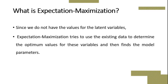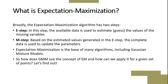Since we do not have the value for the latent variable, Expectation Maximization tries to use the existing data to determine the optimum value for this variable and then find the model parameters. This algorithm is divided into two steps: the E-step and the M-step. In the E-step, the available data is used to estimate or guess the value of the missing variable. In the M-step, based on the estimated values generated in the E-step, the complete data is used to update the parameters. Expectation Maximization is the base of many algorithms, including the Gaussian Mixture Model.